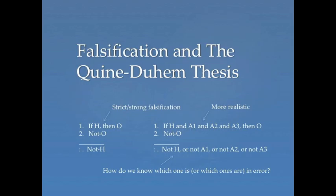So in summary, strict falsification goes like this: if H, then O, not O, therefore not H. Check out the schema on the left. In this sort of case, it's deductively guaranteed that H is false. So we have deductive proof for thinking H is false. And if we're trying to get at the truth, then we can just give up H, because we know, deductively, that it's false.